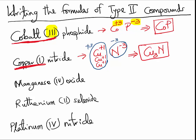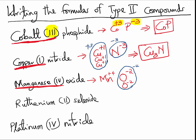Manganese(IV) oxide — we have manganese and oxygen. According to this name, the manganese has a charge of plus 4. Oxygen is from group 6A in the periodic table, so it has a charge of negative 2. To balance out the charges, we need one more oxygen so that the total negative would be negative 4 to balance out the total positive of positive 4. That means the formula of Manganese(IV) oxide will be MnO₂.